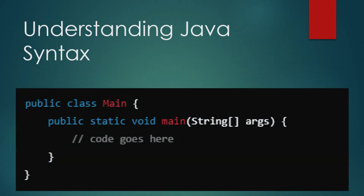To understand how printing works in Java, we need to start with the basics of the Java syntax. Every Java program begins with a class definition. A class in Java is like a blueprint for creating objects, but at the very least, it serves as a container that holds all your code. For example, you might write: public class Main { public static void main(String[] args) { your code goes here } }